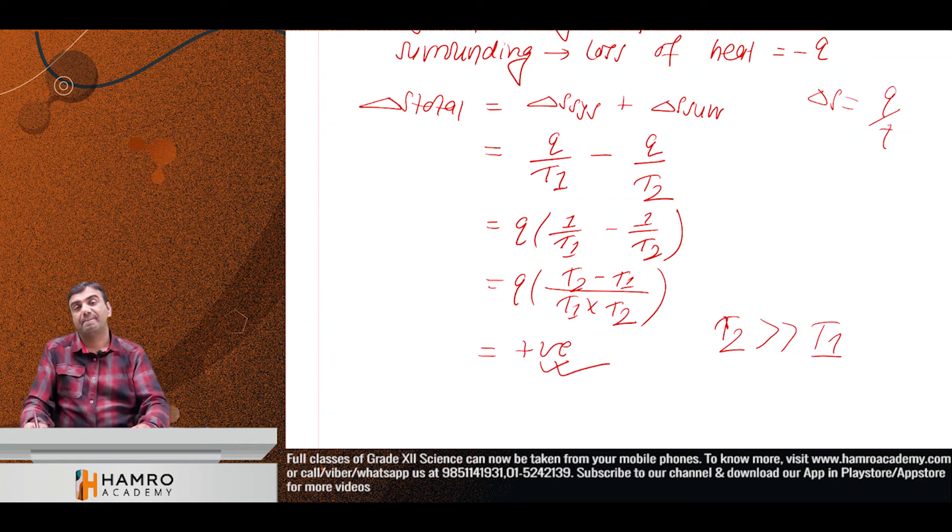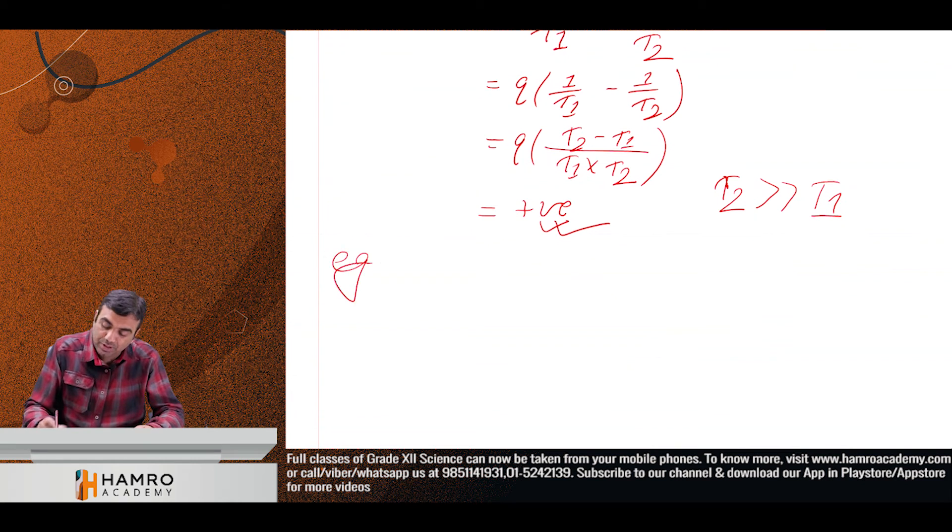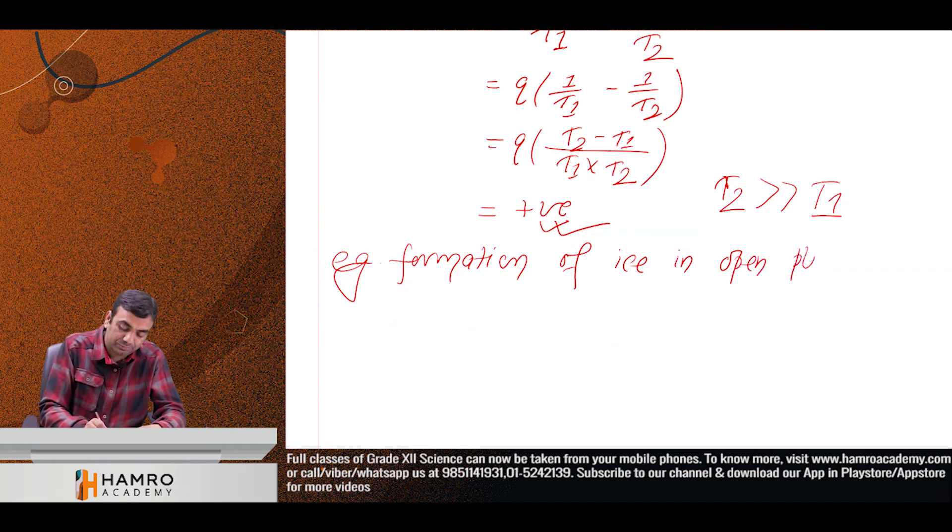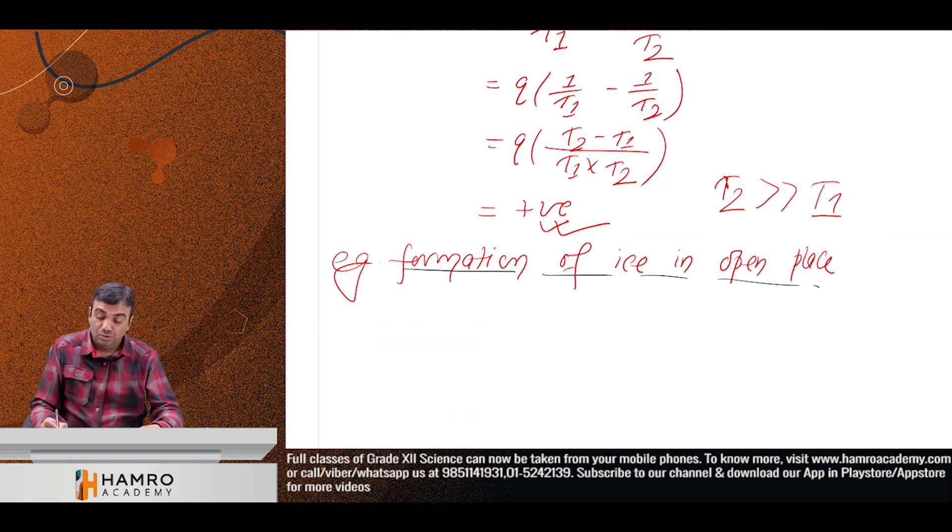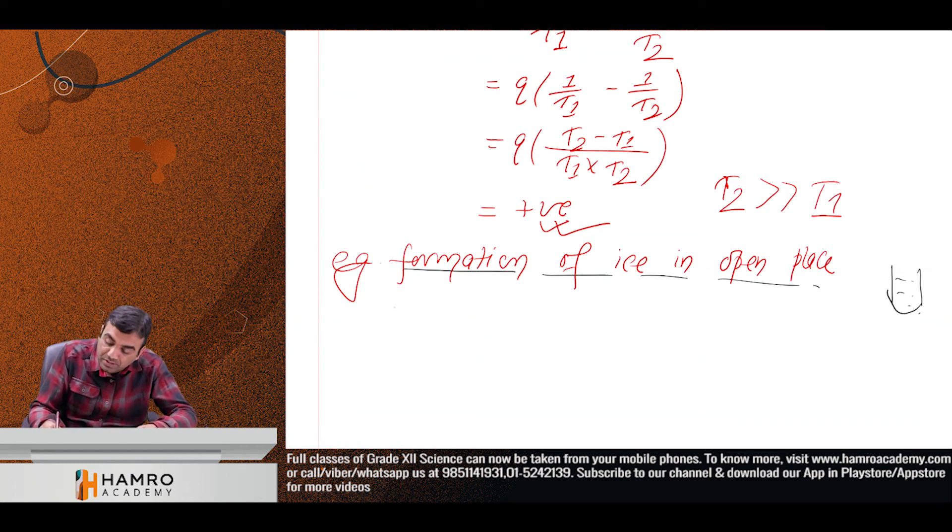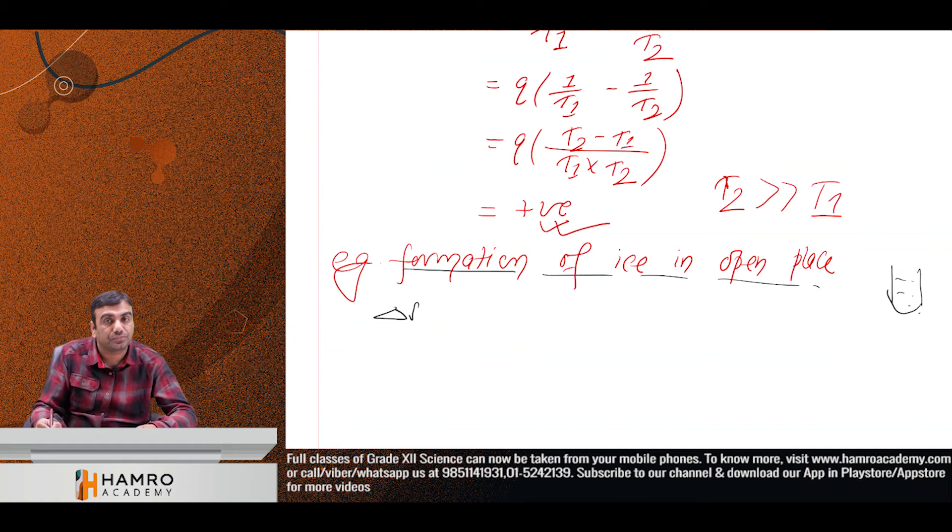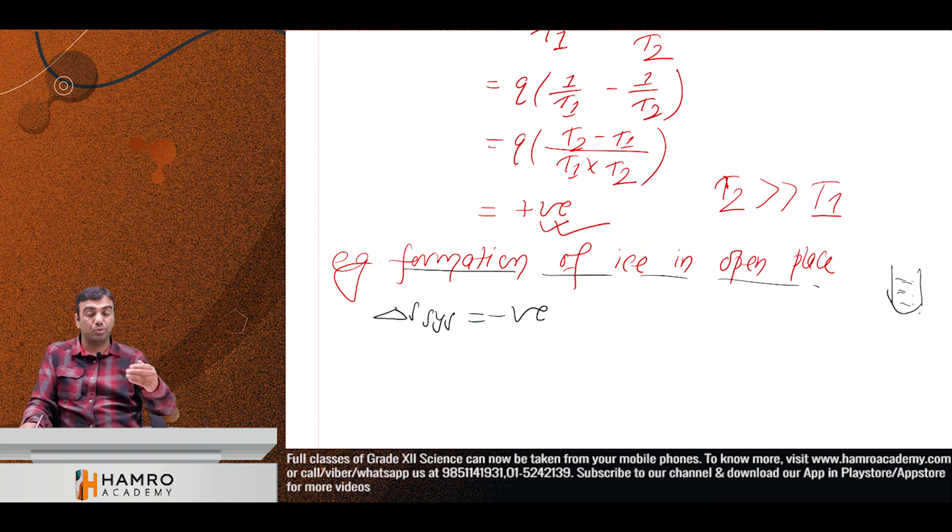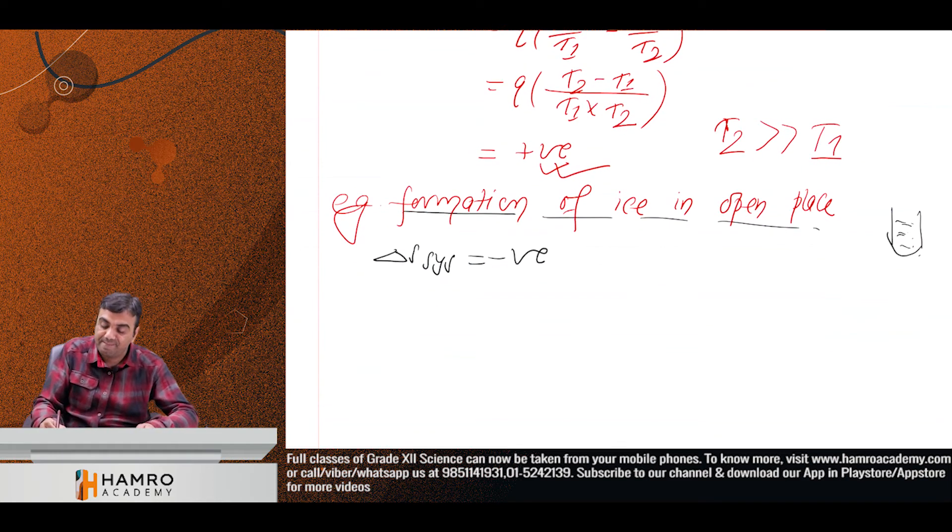It's a re-illustration. Now example. Spontaneous formation of ice in open place. Spontaneous system. Water to ice, entropy of water. Entropy is, delta S system negative. Ice to entropy spontaneous. Ice to water is to water.